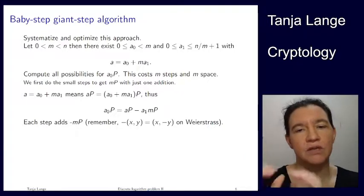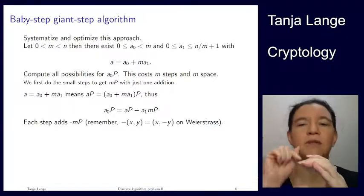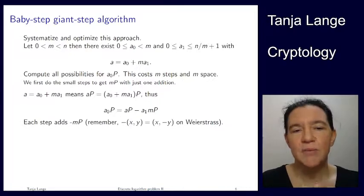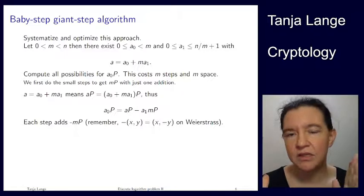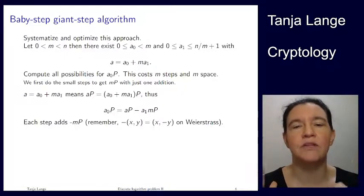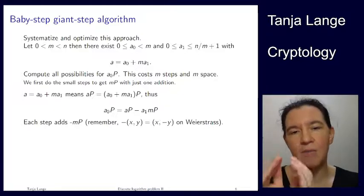That means I'm taking A equals A0 which is A mod m. And then whatever multiple of m I need in order to get to A. And then A0 is between 0 and m. And A1 is large enough so that I can get the whole range till n. And so that means n divided by m plus 1. Because typically n we want a prime group order, so m will not be a divisor. But it's in that range. And then I'm going to compute all these small pieces. So I'm actually going to reverse the order of what I've been doing on the previous page with the multiple targets.